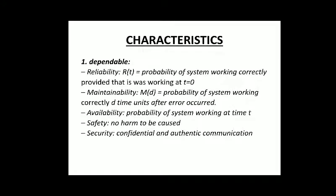The characteristics of embedded systems start with dependability — the system needs to be dependable, reliable, and have high maintainability and availability, as well as safety and security. Reliability R(t) is a function of time: the probability of the system working correctly given that it was working at t=0. It is a fraction — the ratio of the number of times it has worked perfectly to the total number of times it has operated.